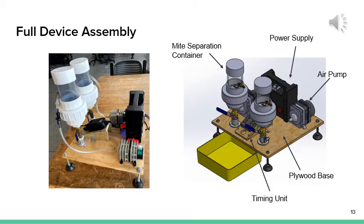Here's our full device assembly. The image on the array has the key features called out. There are two mite separation chambers to allow the user to run two samples simultaneously. The power supply is a large lithium ion battery pack and the air pumps supply fresh air to each container at a rate of 45 liters per minute. The base was manufactured out of plywood for ease of manufacture and cost savings. The timing unit is programmable and allows the user to create their own custom cycle. All electronic components are equipped with overcurrent and overheat protection along with waterproof housings.